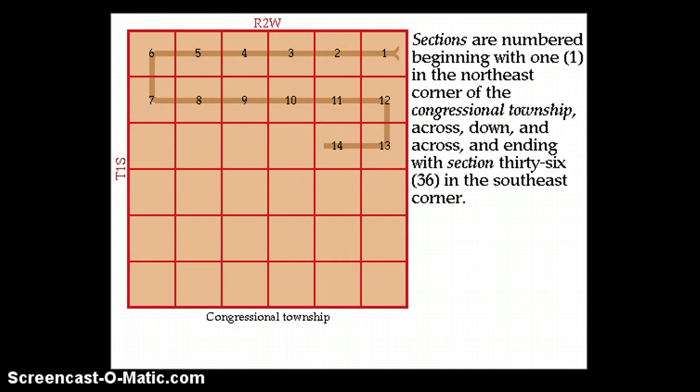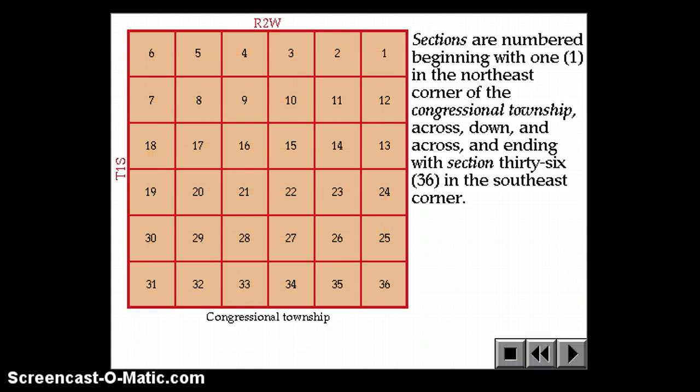Sections are numbered in kind of a weird way. They start in the northeast corner, and they go to the left, then down one to the right, then down one to the left, then down one. So one through 36 is the way that the sections get numbered.